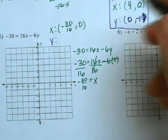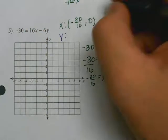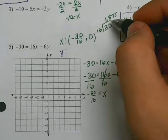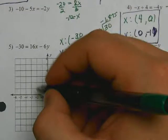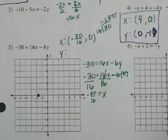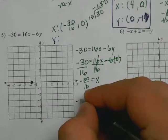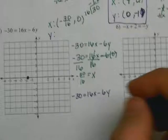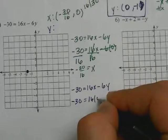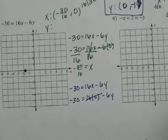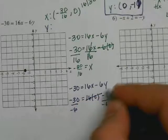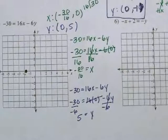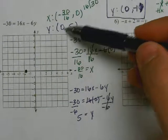So my x intercept is negative 30 over 16 comma 0, when y is 0. Now if you don't know how to graph a fraction, change that to a decimal and you get negative 1.875, so put a point on the graph there. To find the y intercept, rewrite the problem: negative 30 equals 16x minus 6y. Substitute 0 in for x, so negative 30 equals 16 times 0 minus 6y. That cancels, and dividing both sides by negative 6 — negative divided by negative is positive — 30 divided by 6 is 5. So my y intercept is 0 comma 5, because when x is 0, y is 5.